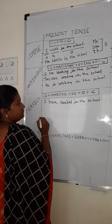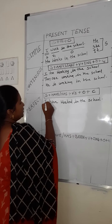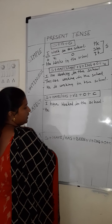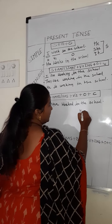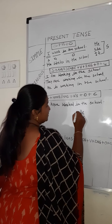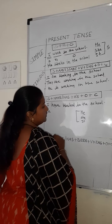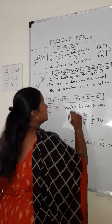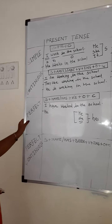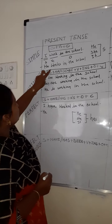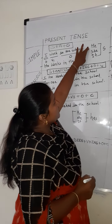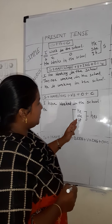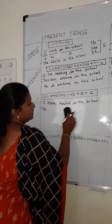If I use 'he' as the subject, I cannot use 'have.' For he, she, it — the third person singular — we must use only 'has' in the present perfect tense. So for he, she, it, 'has' must be used.